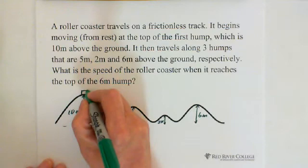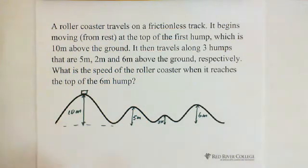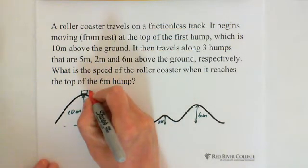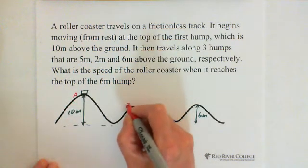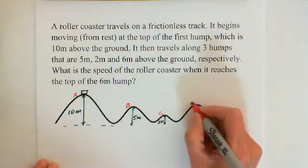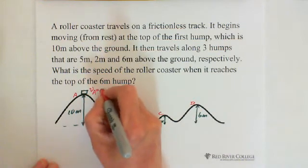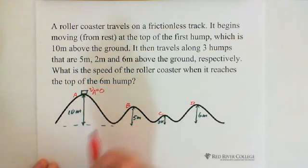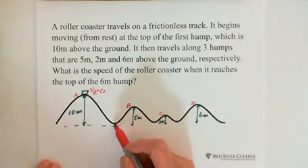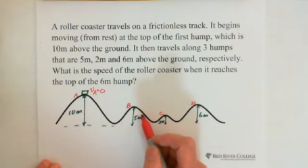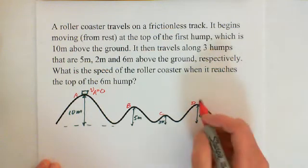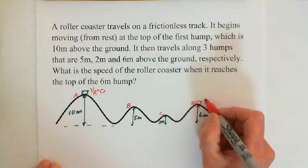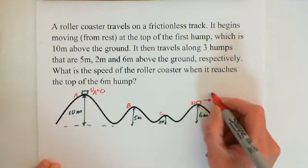So let's say this is the roller coaster. It starts from rest. So if we label this point at the top of this hump as A, this is B, this is C, this is D. So V_A equals 0. They start from rest, just sliding down, right? And passing through, traveling along three humps, so up and down and reaching the third, the last hump, which is 6 meters high. So we are looking for what is the speed at this point. We're looking for V_D.